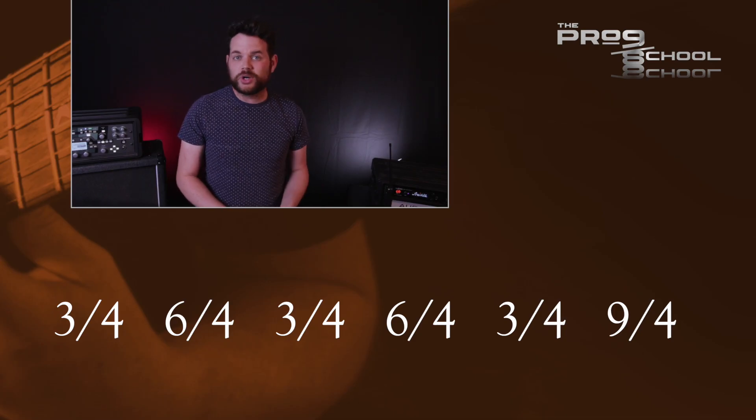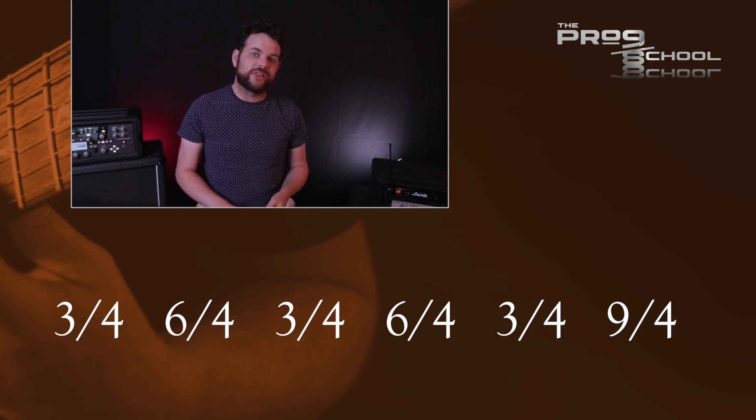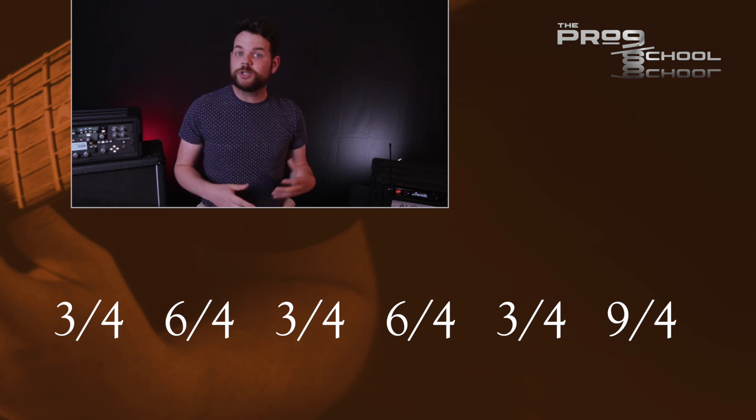In the first half of the tune, this 30 quarter note long pattern is approached in groups of three quarter notes. The time signatures go as follows: 3/4, 6/4, 3/4, 6/4, 3/4, and 9/4 — and this equals 30 quarter notes.